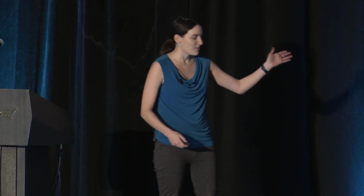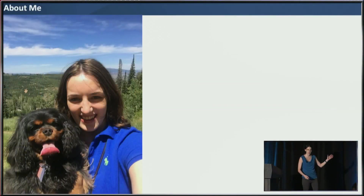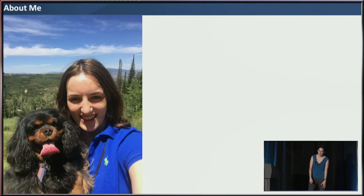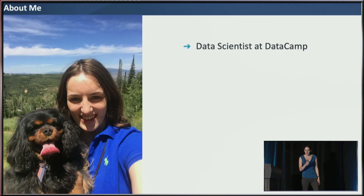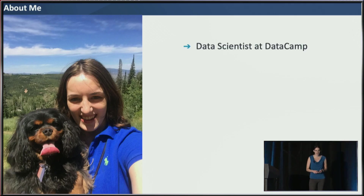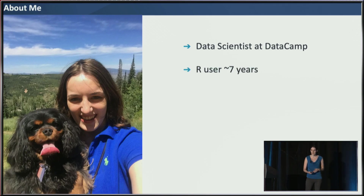So a little bit about me. This is my part-time dog, Abby. I call her my part-time dog because I steal her from my parents occasionally. I'm a data scientist at DataCamp where I work on the growth team on experiments, and that's a lot of what you'll be hearing about today.